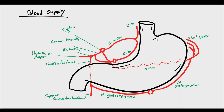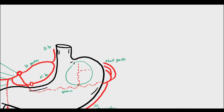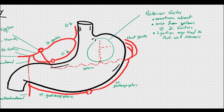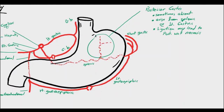In addition to these five main arteries — the two gastrics, the two gastroepiploic arteries, and the short gastric — we can add the posterior gastric artery, which is sometimes absent. But when present, it arises from the splenic artery or from the left gastric artery. Its ligation during near-total gastrectomy may lead to gastric stump necrosis or anastomotic leakage. This is more common when it arises from the splenic artery, not from the left gastric artery.